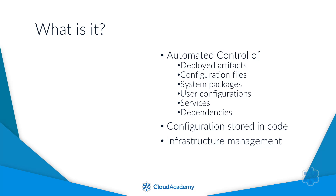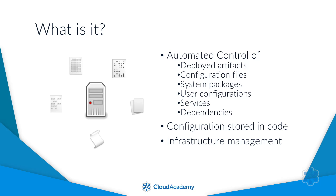Configuration management is a process for maintaining the configuration of systems throughout their lifecycle. A system under configuration management control can have deployed artifacts, configuration files, system packages, user configurations, and services, all defined in source control. This ensures a repeatable process, which is the foundation of automation.